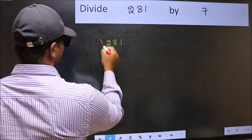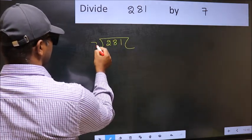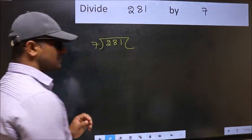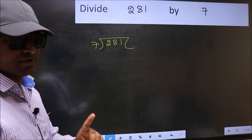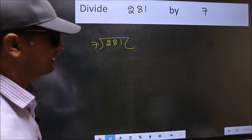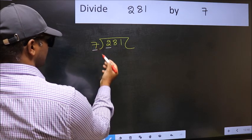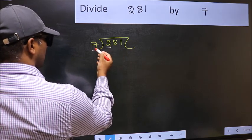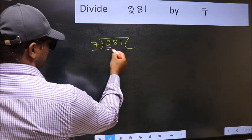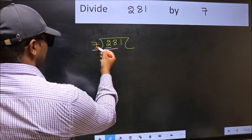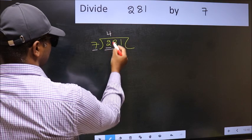281 and 7 here. This is your step 1. Next, here we have 2 and here 7. 2 is smaller than 7, so we should take 2 numbers, 28. When do we get 28 in 7 table? 7 fours 28.